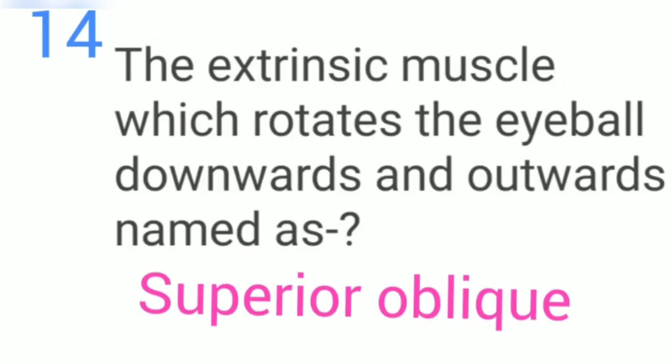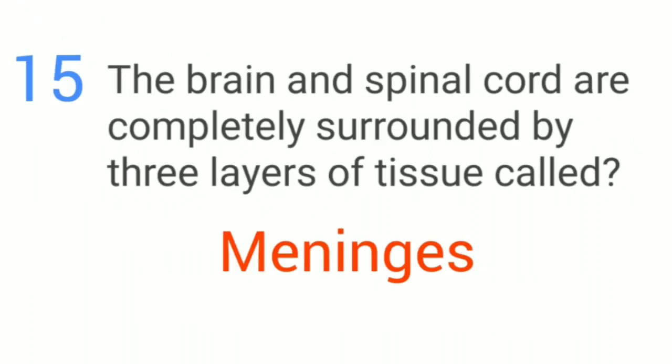The extrinsic muscle which rotates the eyeball downwards and outwards is named the superior oblique. The brain and spinal cord are completely surrounded by three layers of tissue called the meninges.